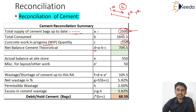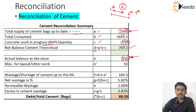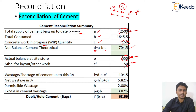The net balance cement theoretical (D) equals total received quantity (A) minus total consumed (B) minus work in progress (C), so A minus B minus C gives the total net theoretical balance of cement bags. The actual balance at site is 550 — you visit the storeroom and find only 550 bags left. The miscellaneous item covers layout and other works: before construction activity starts, benchmarks are set up, and some extra bags are used for works not mentioned in the contract. These are miscellaneous layout works, and for this example we've used 50 bags.